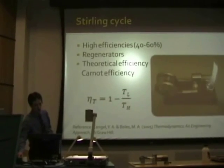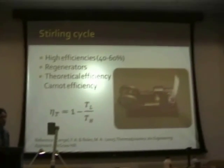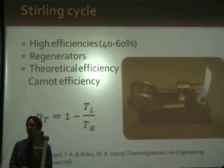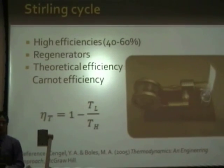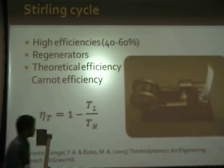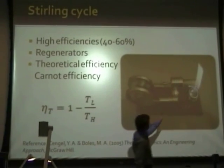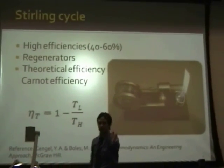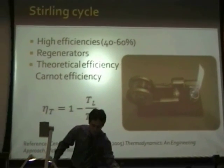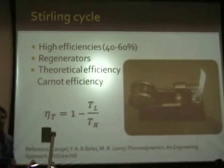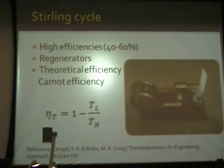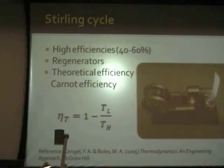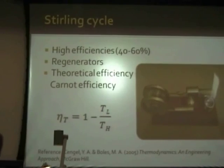Moving on to the Stirling cycle: the Stirling cycle achieves very high efficiencies of around 40 to 60 percent. It incorporates a regenerator, which plays an important role within any Stirling engine. The theoretical efficiency for a Stirling cycle is the same as Carnot efficiency — one minus the ratio between the low temperature and the high temperature.